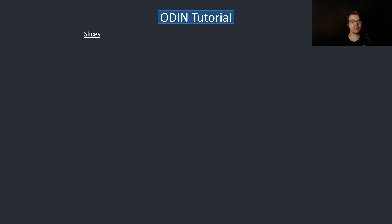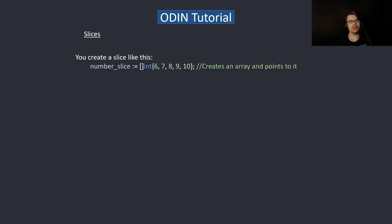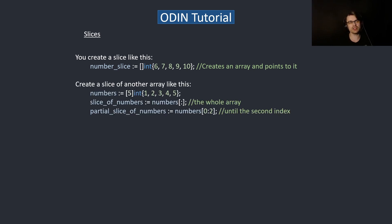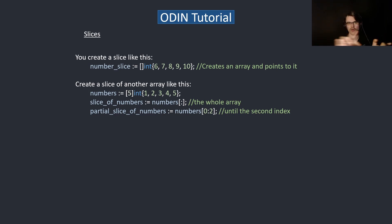Slices are basically a pointer with a length, so they're very similar to arrays but they point to an array with a length. If you create a slice like this, it will actually create an array and link to it with a pointer, because the data has to exist somewhere. You can also create a slice of another array — create the numbers array and then slice it using bracket-colon syntax, which represents the whole array.